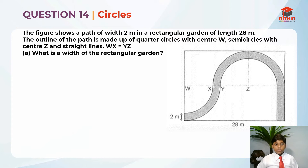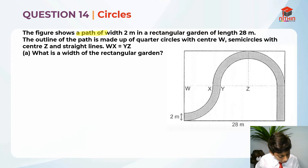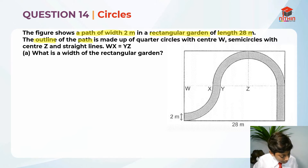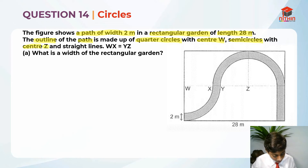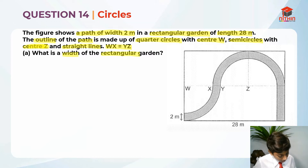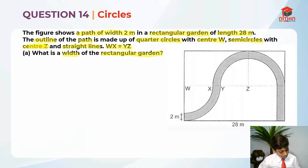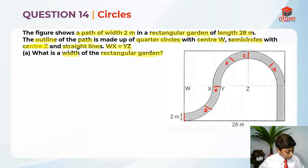Now that we have read the question, we should highlight the key information. The figure shows a path of width 2 meters in a rectangular garden of length 28 meters. The outline of the path is made up of quarter circles with center W, semicircles with center Z, and straight lines. WX equals YZ. Part A asks: what is the width of the rectangular garden? The path width is 2 meters everywhere you go — you've got to get that straight in your mind, otherwise it will be really hard to solve this question.